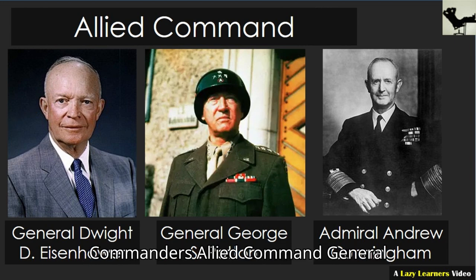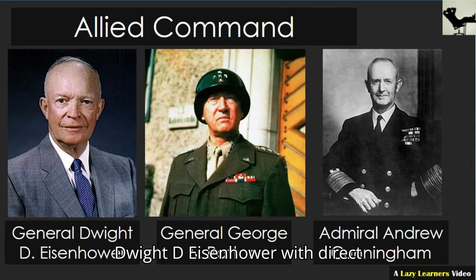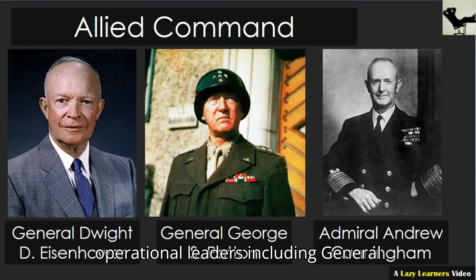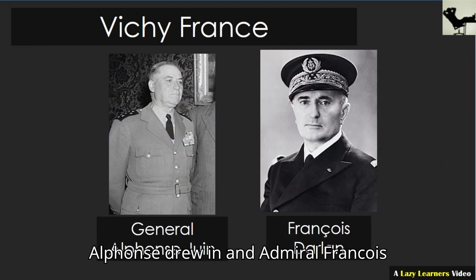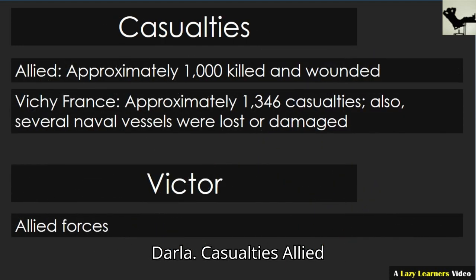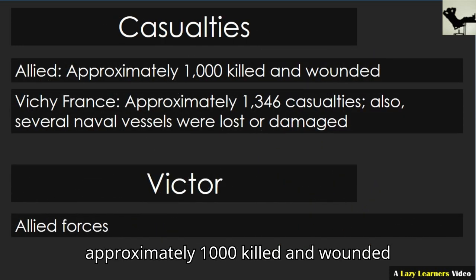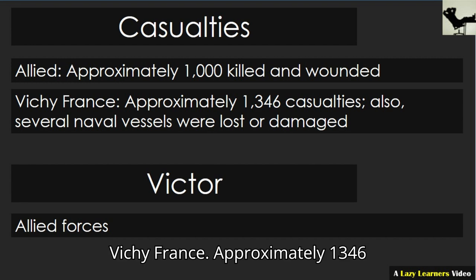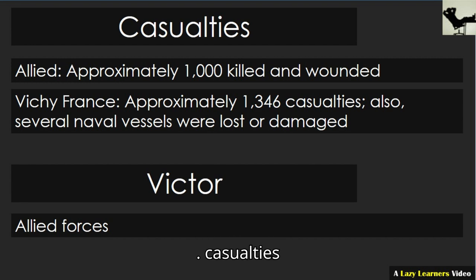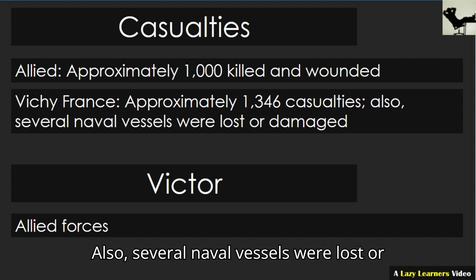Commanders. Allied Command: General Dwight D. Eisenhower, with direct operational leaders including General George S. Patton and Admiral Andrew Cunningham. Vichy France: General Alphonse Juin and Admiral François Darlan. Casualties — Allied: approximately 1,000 killed and wounded. Vichy France: approximately 1,346 casualties. Also, several naval vessels were lost or damaged.